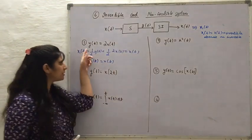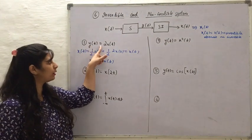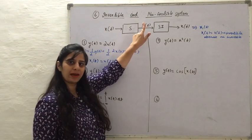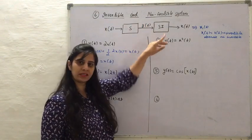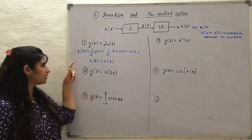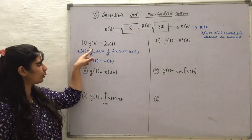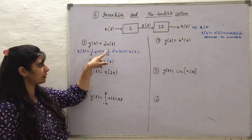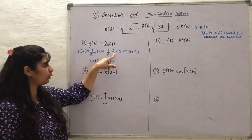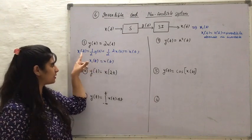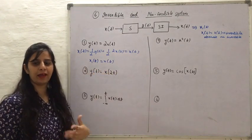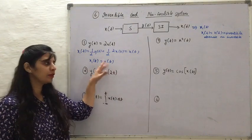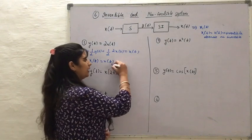The first example is Yt = 2Xt. Yt is the output at this stage. I will pass Yt through one more system — the inverse system. The response I want is X1t = (1/2)Yt. Substituting the value of Yt, which is 2Xt, gives (1/2) × 2Xt. The 2s cancel, so it equals Xt. Therefore, X1t = Xt, and this system is an invertible system.